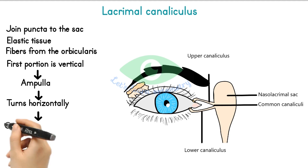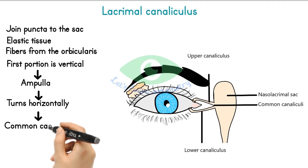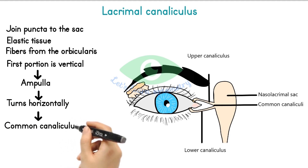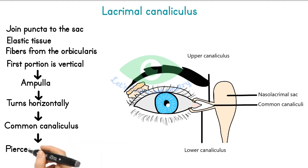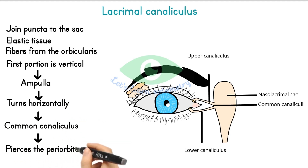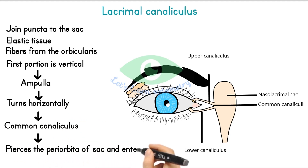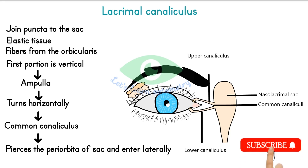The canaliculi join to form a single common canaliculus that pierces the periorbita covering the lacrimal sac and enters the lateral aspect of the sac. The angle at which the canaliculus enters the sac produces a physiologic valve that prevents reflux.